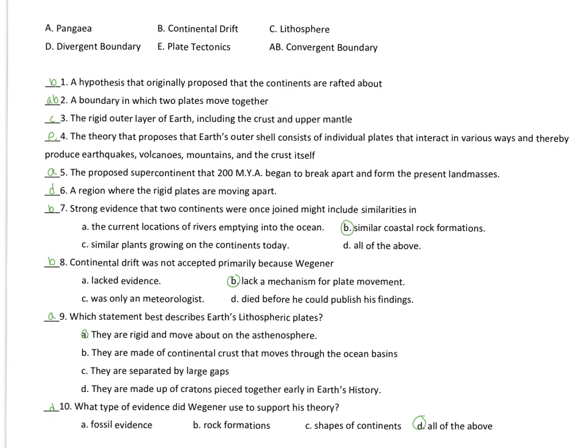On to a little Alfred Wegener. The hypothesis that originally proposed that the continents are rafted about is continental drift. A boundary in which two plates move together is a convergent plate boundary. Remember, your two types of convergent plate boundaries will be collision boundary, if it's continental to continental lithospheric plate, and subduction if it's oceanic to anything else.